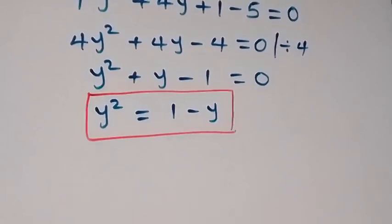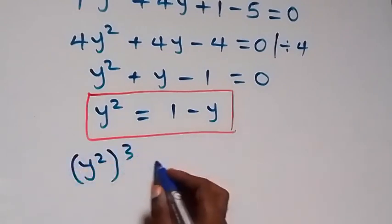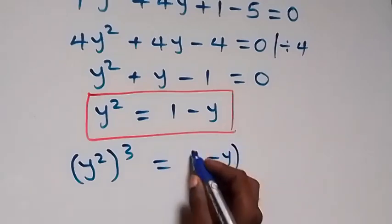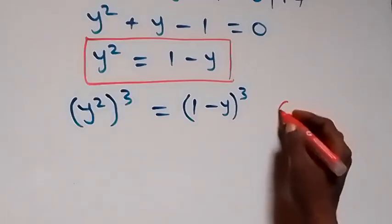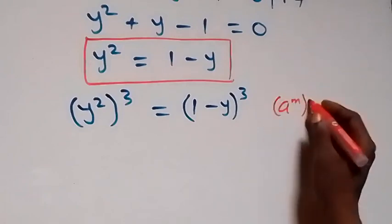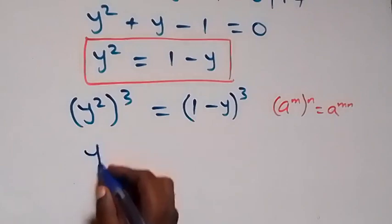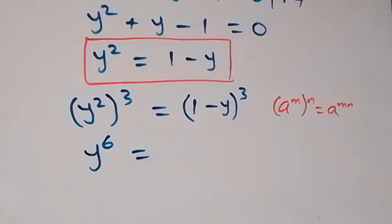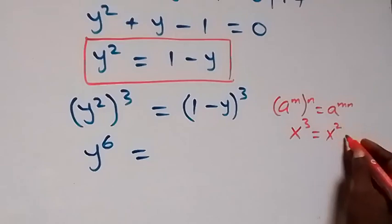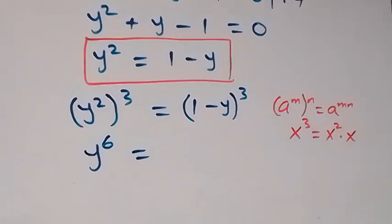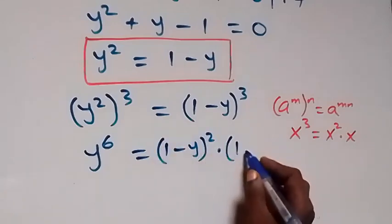We raise both sides to power 3. So y² raised to power 3 equals (1 - y) raised to power 3. From the law of indices, when we have a^n raised to power m, this gives a^(mn). So 2×3 gives y raised to power 6. Now equals (1-y)^3. We can write x^3 as x² × x, so we break this down as (1-y)² times (1-y).